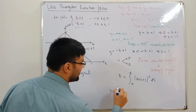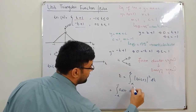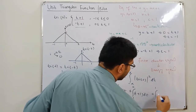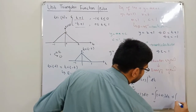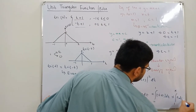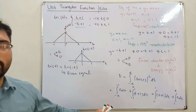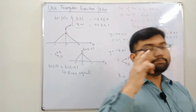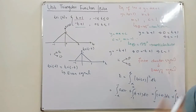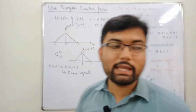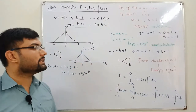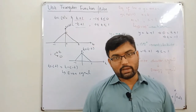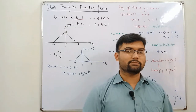Breaking up the integral: from -∞ to -1 the function is zero; from -1 to 0 it's ∫(t+1)² dt; from 0 to 1 it's ∫(-t+1)² dt; and from 1 to ∞ it's zero. I'll leave this for you to solve. Personally, I got inconsistent answers — first zero, then one — while a friend got 2/3. So for me the shortcut is fine: it's a finite duration energy signal. That's all about the triangular function.